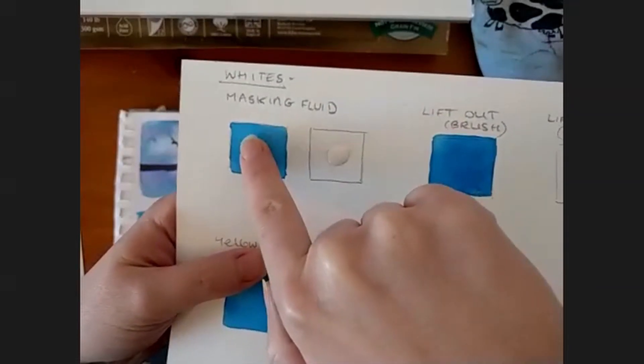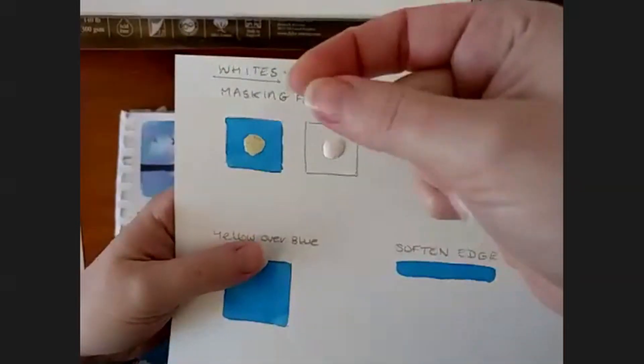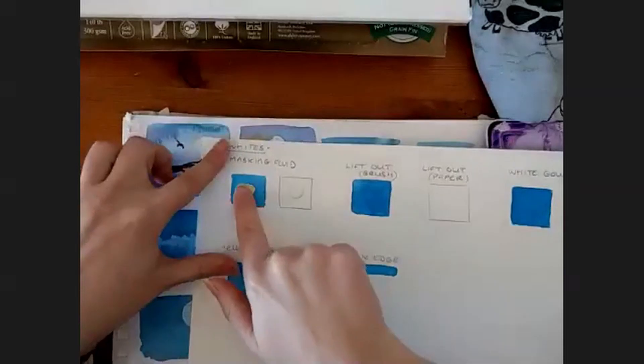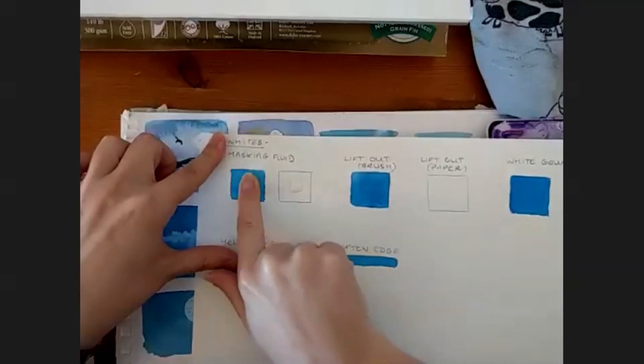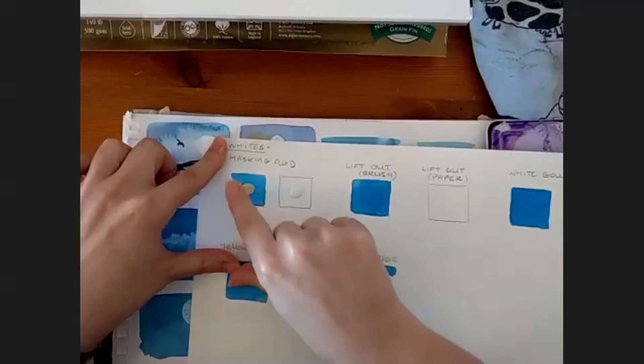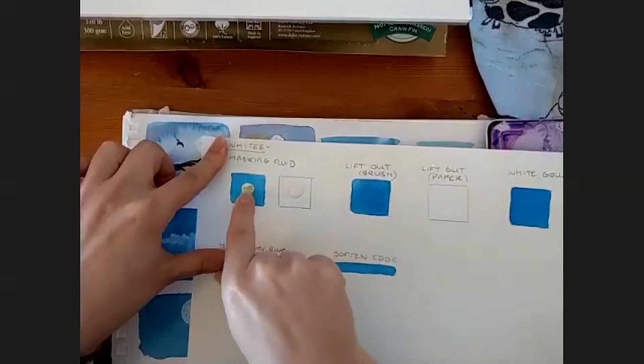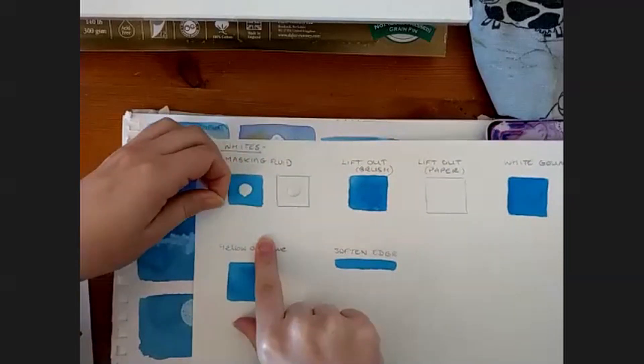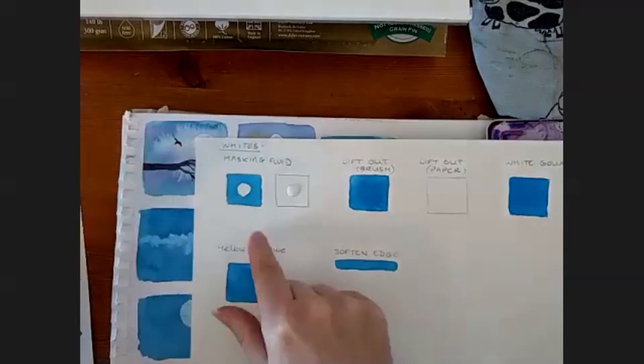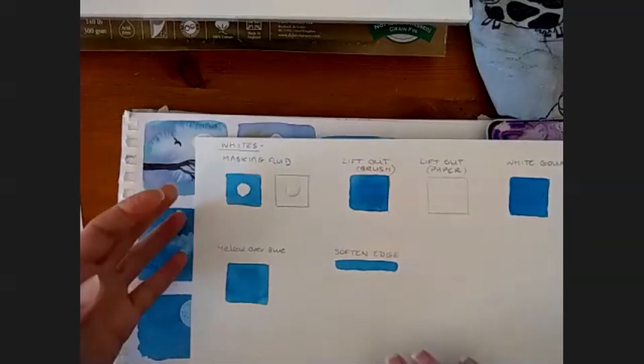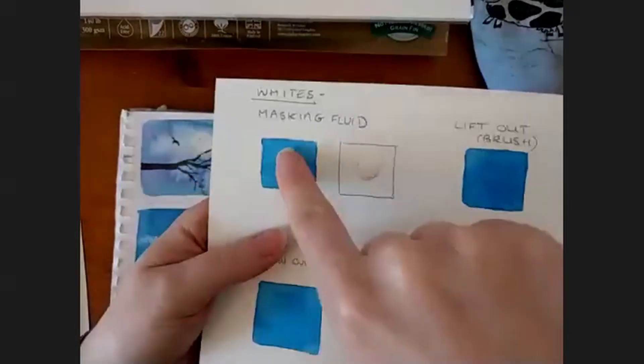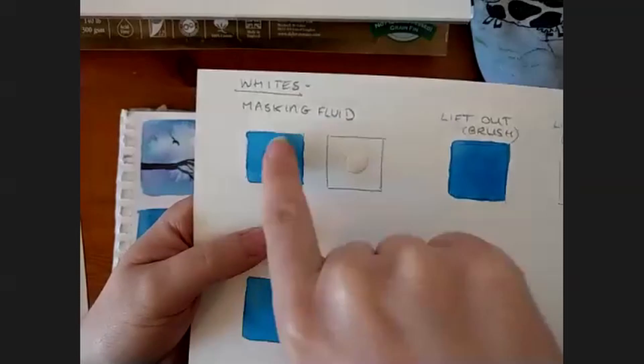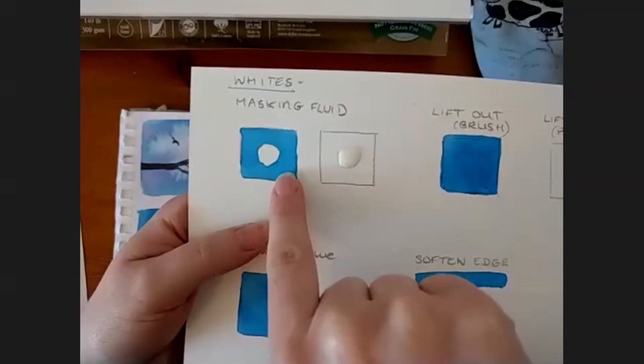Then you just rub the masking fluid off. You can touch your fingers to it to make sure it's not leaving any on your finger, so you know it's fully dry. And then just rub that off. Once you start getting an edge off the paper, you can start to peel it off. You can see that's completely masked off the white of the paper there, left that completely clear of that blue paint that I put over the top.